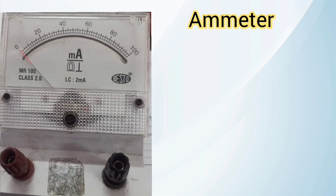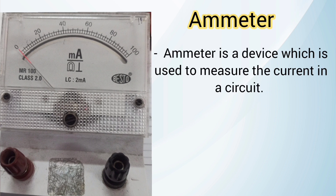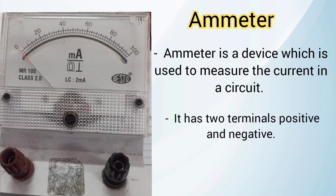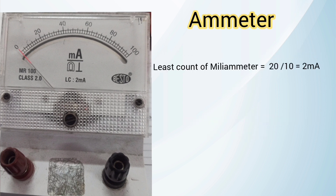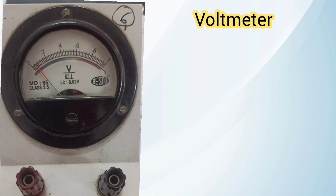Ammeter: An ammeter is a device which is used to measure the current in a circuit. It has two terminals, that is positive and negative. The least count of the milliammeter is 20 divided by 10, equal to 2 mA. One division value is 2 mA and 5 divisions is equal to 10 mA.